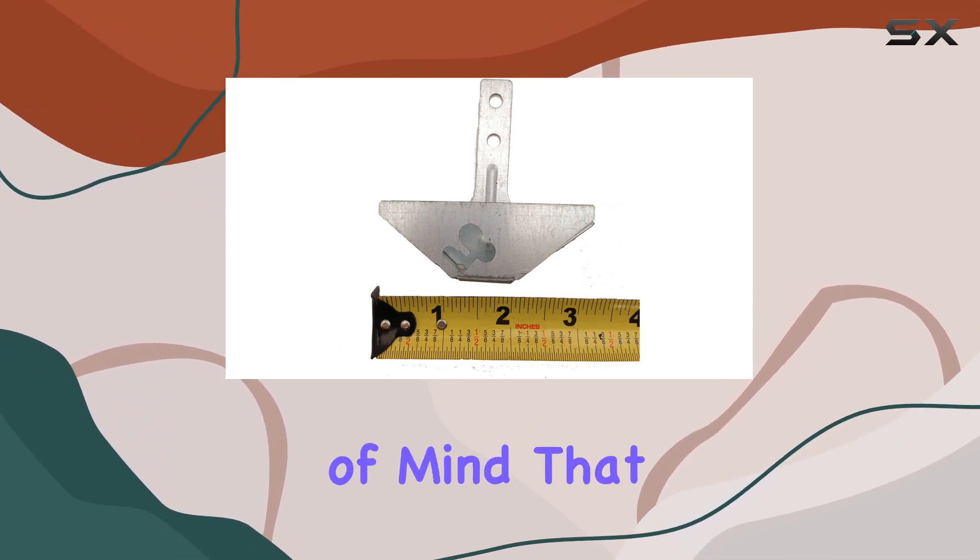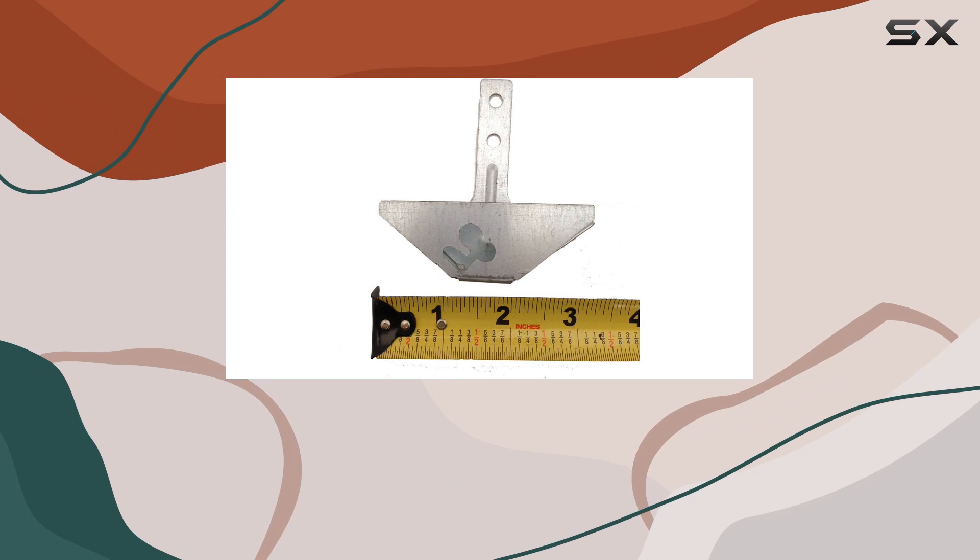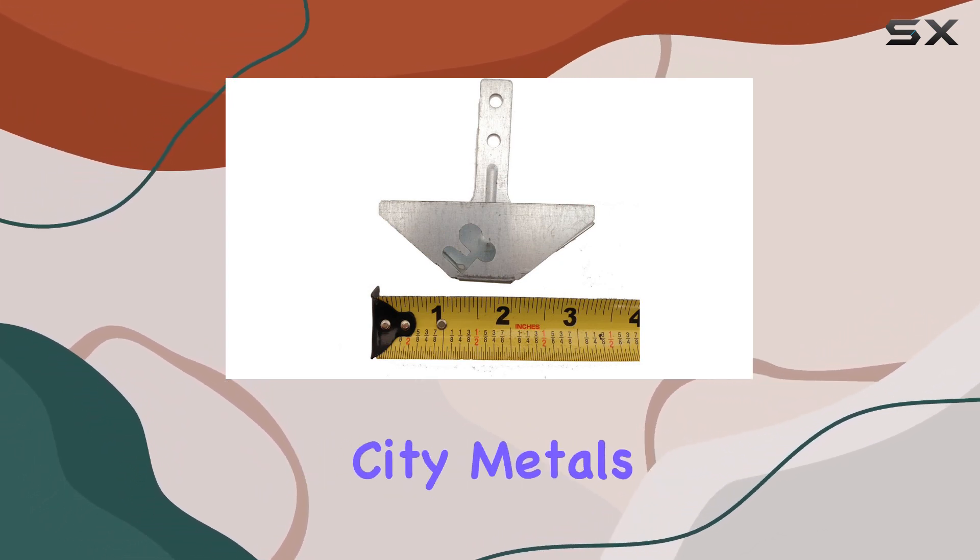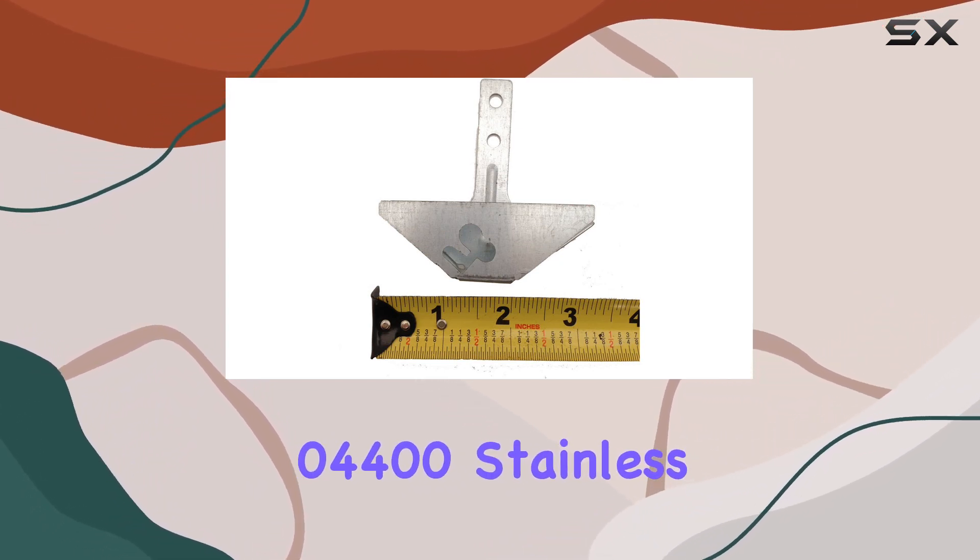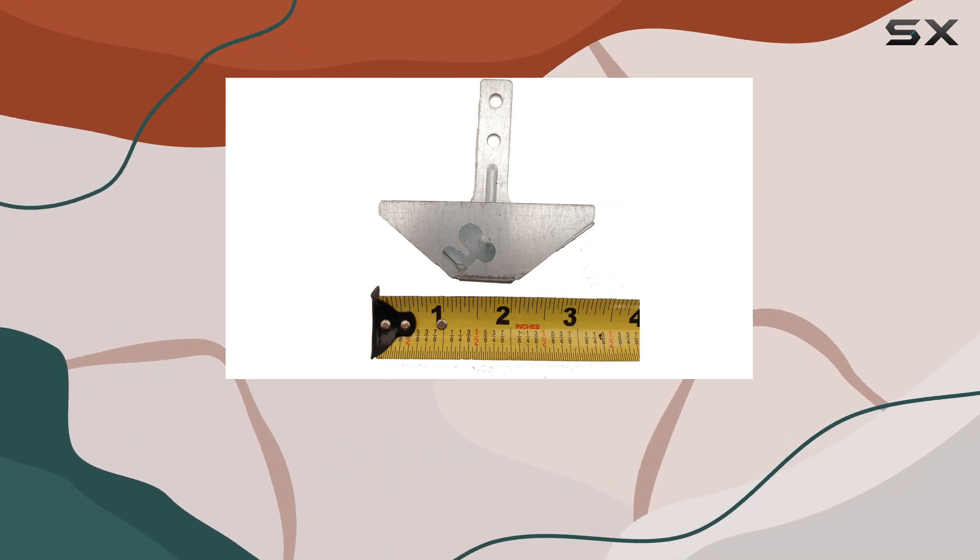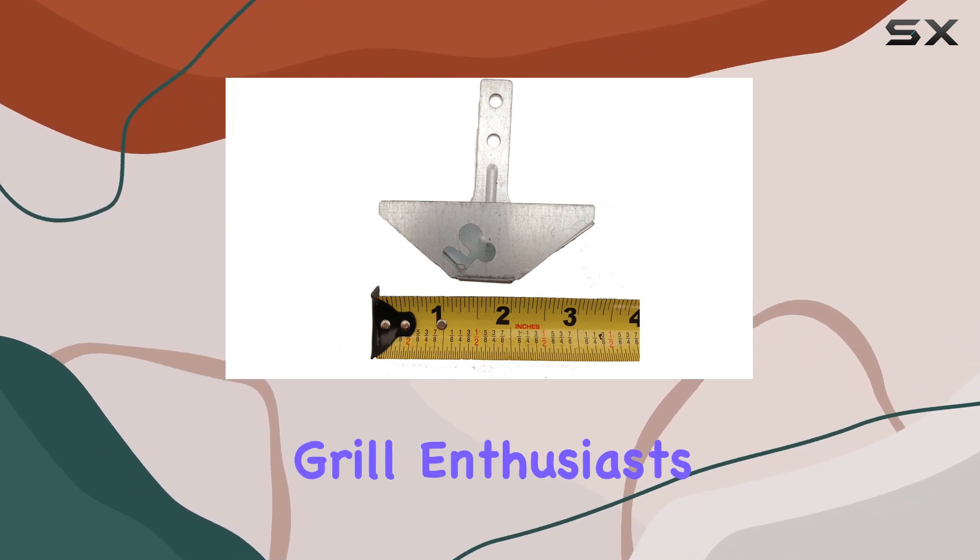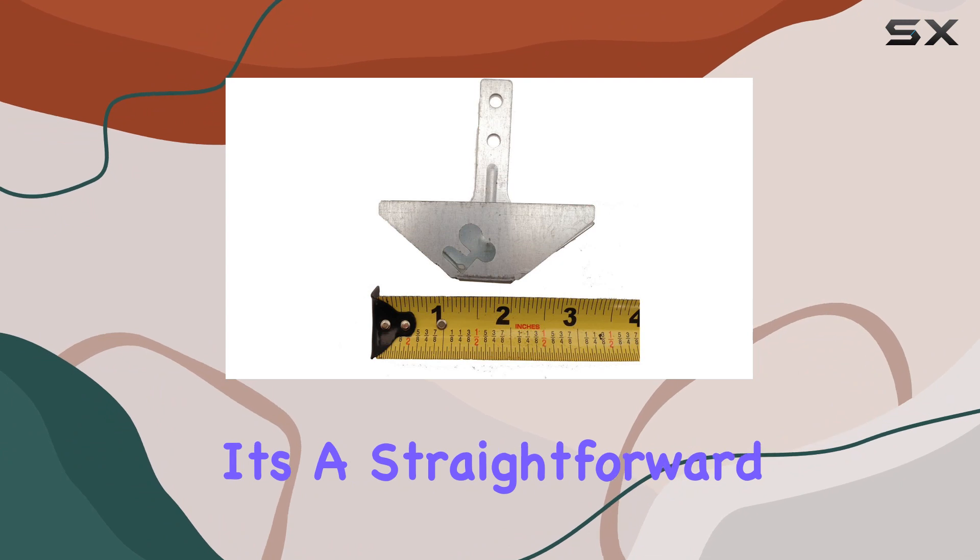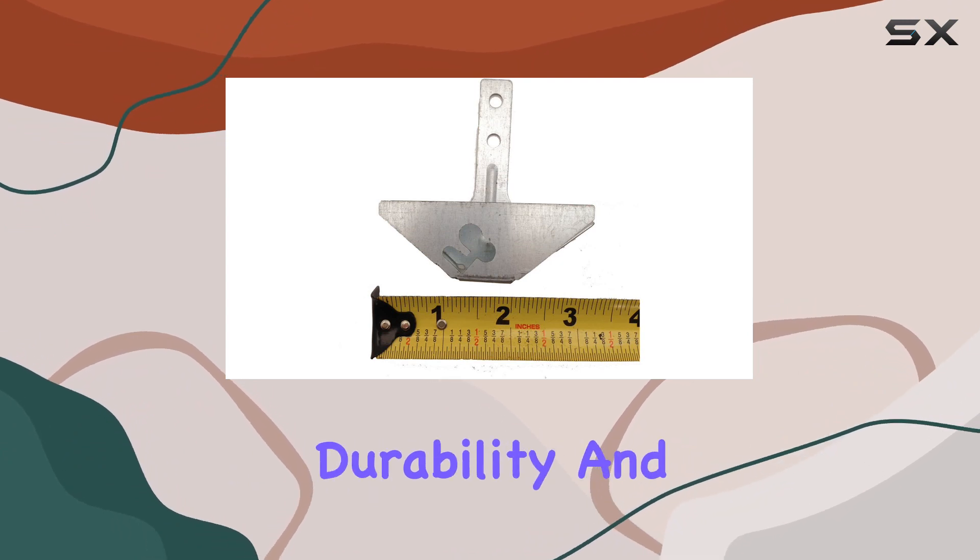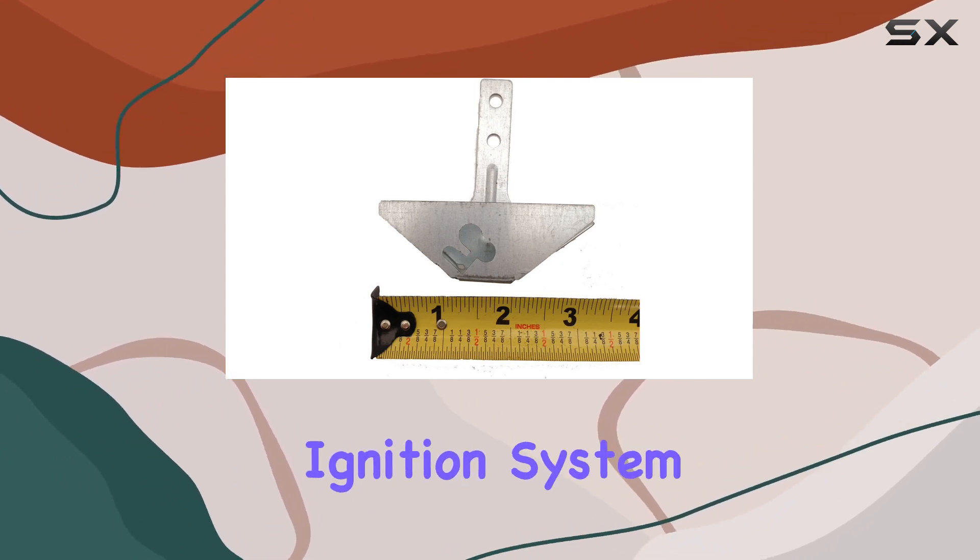giving you the peace of mind that your barbecue adventures won't be hindered by ignition hiccups. To sum it up, the Music City Metal 04400 Stainless Steel Igniter Collector Box is a solid investment for Kenmore grill enthusiasts. It's a straightforward replacement that brings durability and reliability to your grill's ignition system.